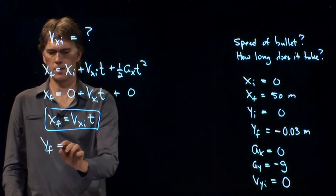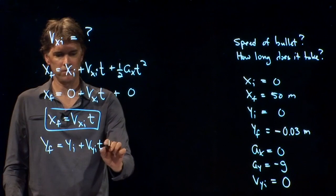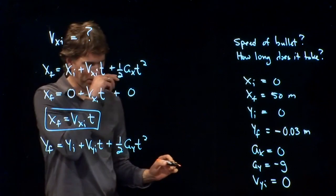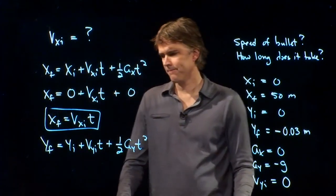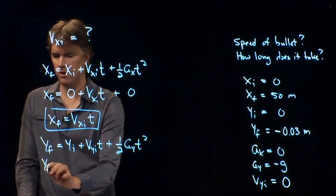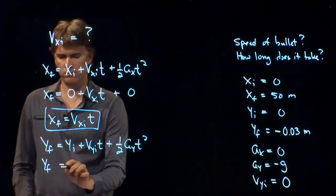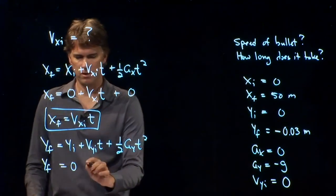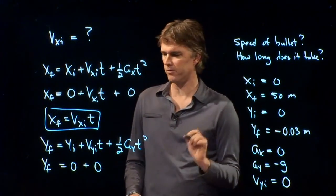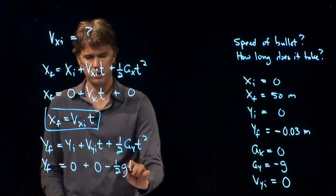y_f = y_i + v_yi*t + (1/2)a_y*t². And let's see what we know. We know y final, right? That is our negative three centimeters. Y initial we said was zero. V_y initial we said was also zero since it was fired horizontally. And a_y is negative g.